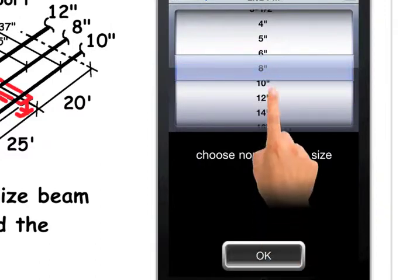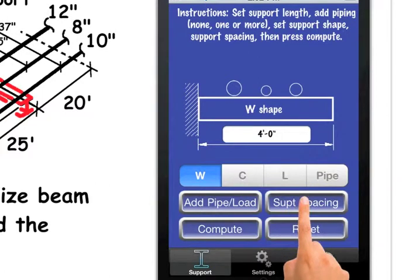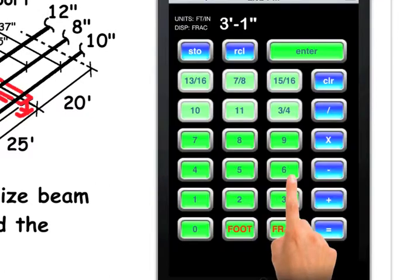The support is now loaded with the pipe. Now I need to set the adjacent support lengths. I press the support spacing button and add the dimensions.